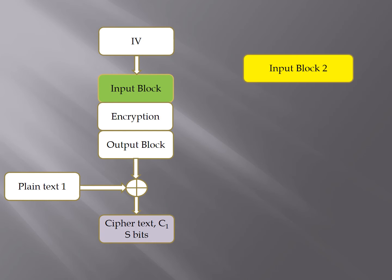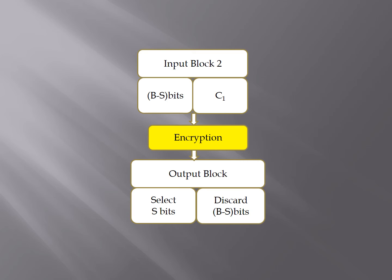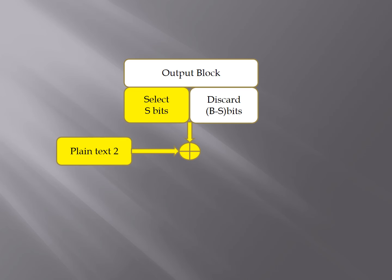We have now obtained our first cipher text. To get the next S bits of cipher text, we will need to get the next input block. The input block from the previous step will be shifted left by S bits and used as the leftmost bits of the new input block. The previous cipher text will then be reused as the rightmost bits of the new input block, giving us the new input block. Similar to the previous step, we encrypt the new input block to obtain the output block. The S bits of the output block and the next S bits of the plaintext are then XORed to obtain the next cipher text.